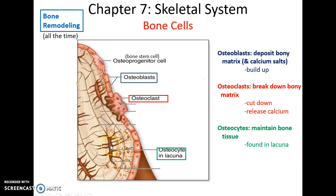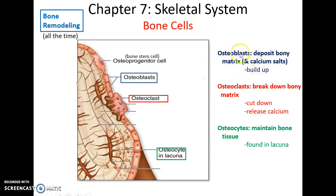Should any osteoblast get trapped in lacunae inside the bone tissue, it will turn into an osteocyte. The osteocyte's function is to help maintain the health of the bone tissue. This process of building up and breaking down bone occurs all the time everywhere in our body, and we refer to it as bone remodeling.